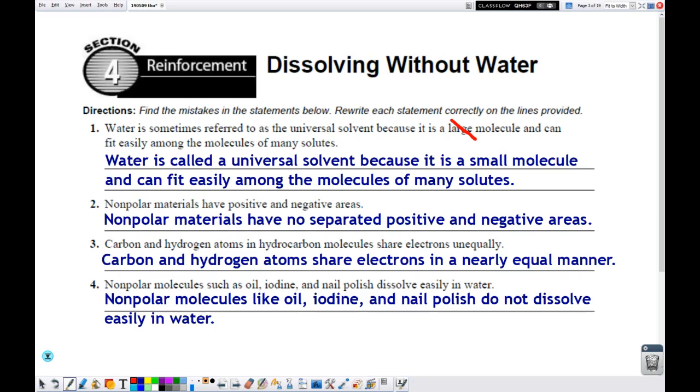Number two. Polar materials have positive and negative areas. This is more accurately stated as nonpolar materials have no separated positive and negative areas. So actually, they're neutral. That sentence doesn't make sense at all by itself, but if you put the word no in there, it makes sense.